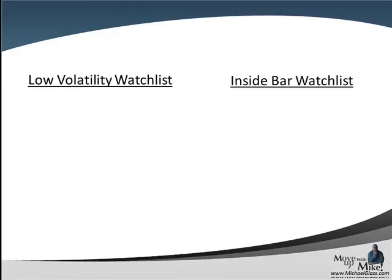Coming to today's watch list — first we have our low volatility watch list, which is the one-hour time frame using Bollinger Bands, trying to find consolidation and low volatility to find that breakout. Same thing with our inside bar watch list, which is watching the range of one day compared to the previous day — looking for that breather, that consolidation, and finding that breakout in the direction of the trend. But Friday we had a lot of big action, so big action means no consolidation, means no small ranges — we have no candidates for either the low volatility watch list or the inside bar watch list.